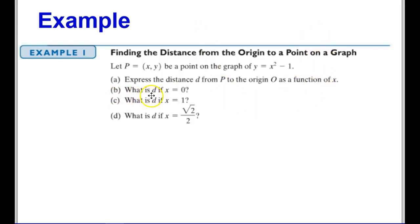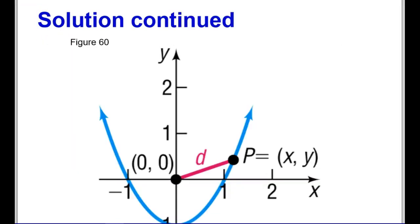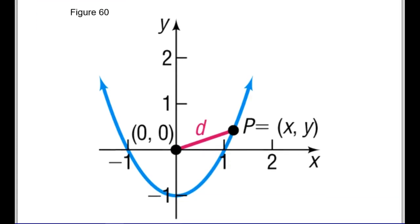We're going to figure out d if x is 0, then x is 1, and then x is the square root of 2 over 2. First, let's look at the picture. This blue line is the curve of y equals x squared minus 1. Here's the origin, and here's a point P we're looking at. Point P could really be any point along this curve, and we're just finding the distance between that point and the origin.